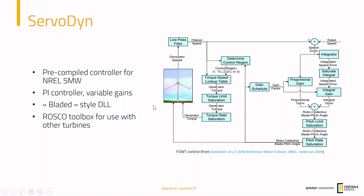You can also tune your own controller using the ROSCO toolbox — ROSCO stands for Reference Open Source Controller. If you want to tune a controller for your own turbine, you can use it; it's quite easy and we will make a tutorial available. But if you want to run with the NREL 5 MW turbine, you can use the available controller.